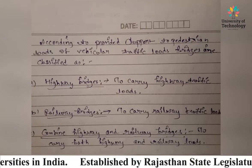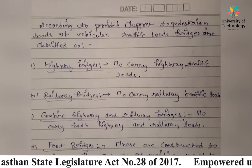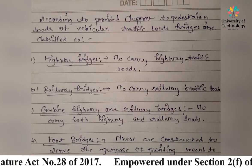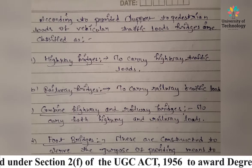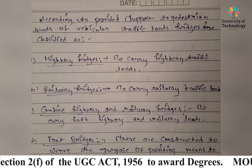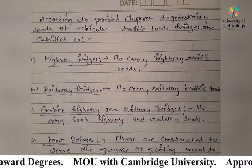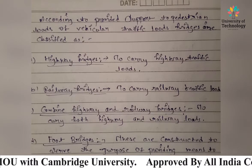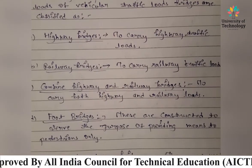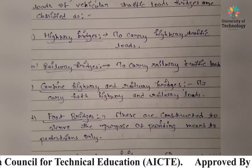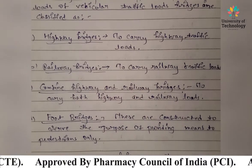The first type is highway bridges, constructed to carry highway traffic loads such as trucks, four-wheelers, buses, two-wheelers, cars, etc. The second type is railway bridges, which carry train loads. All types of trains are included in this category.